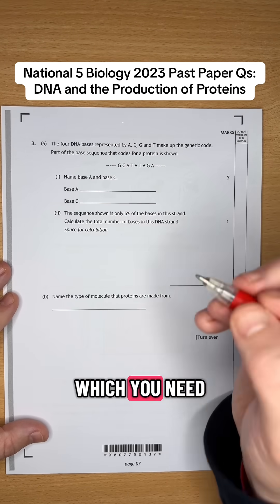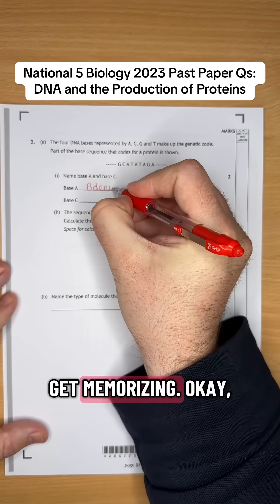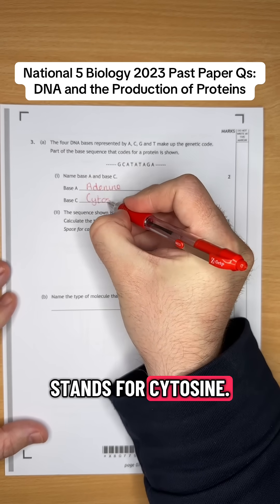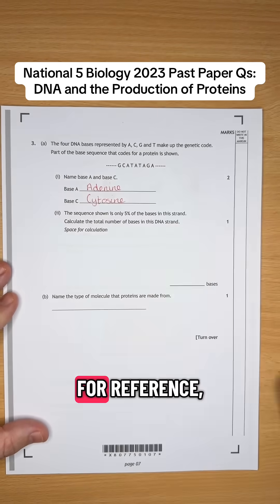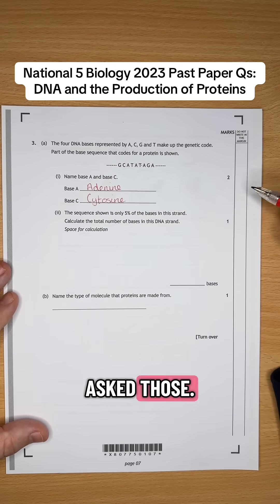This is a straightforward knowledge question which you need to know for your exam. So if you don't know them yet, get memorizing. A stands for adenine, and C stands for cytosine. And just for reference, T stands for thymine, and G stands for guanine as well.